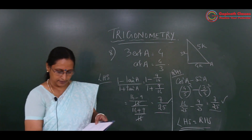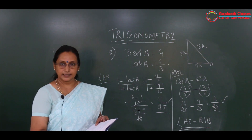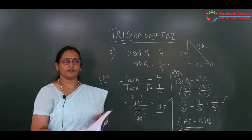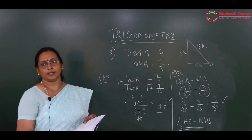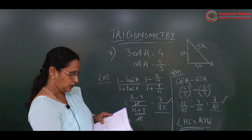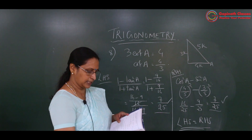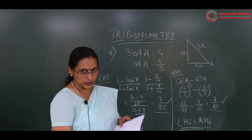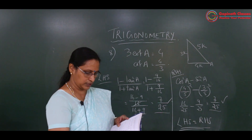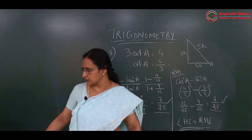We can write LHS equal to RHS. It is verified. Thus many things can be done if we know one trigonometric ratio. Come to the ninth question. In triangle ABC right-angled at B, there are two sub-questions. I will do the first one and the second one you have to do at home.